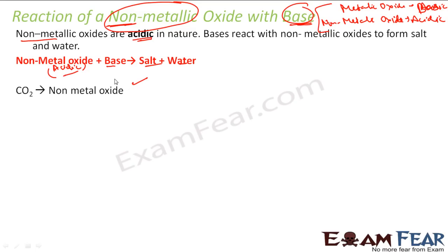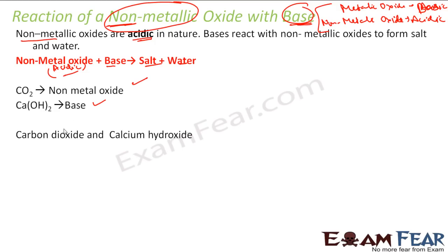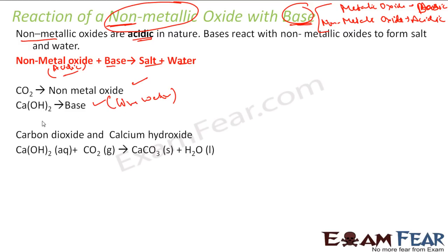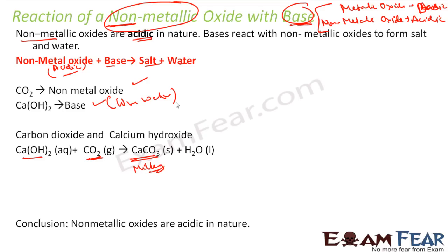We will take carbon dioxide as a non-metallic oxide, and we will take one base — calcium hydroxide, Ca(OH)₂. Calcium hydroxide and carbon dioxide: calcium hydroxide is nothing but lime water. When you pass carbon dioxide into calcium hydroxide, it becomes calcium carbonate, which turns the solution milky. This is the reaction that happens when you have a non-metallic oxide with a base. Non-metallic oxides are acidic in nature — this is the conclusion we derive from the activity.